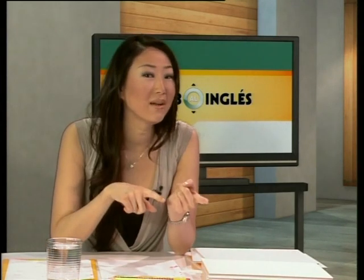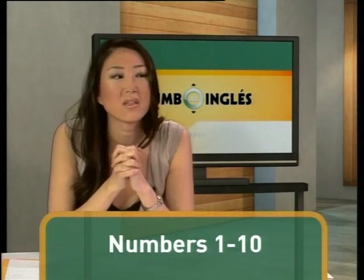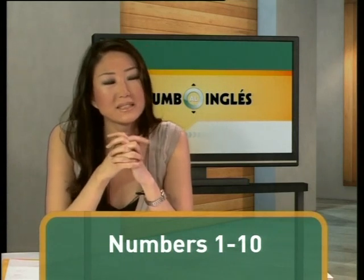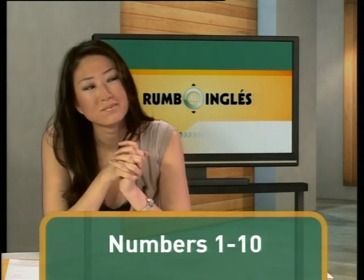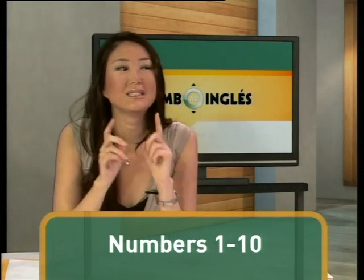Muy bien, Ruben. Thank you very much. Good job today. So, we looked at numbers from one to ten. Siete — Seven. Dos — Two. Tres — Three. Uno — One. Diez — Ten. Ocho — Eight. Cinco — Five. Seis — Six. Dos — Two. Cero — Zero. Or when we use cero in phone numbers — O. Exactamente.